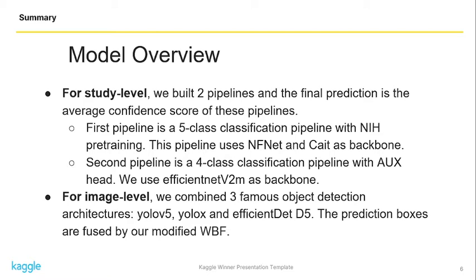In this competition we are required to detect the COVID situation at both study level and image level. For study level we build two pipelines and the final prediction is the average ensemble of these two pipelines. In the first pipeline we use five-class classification models and the backbone is NF-Net and CaRG. In the second pipeline we use four-class classification with a segmentation head and we use EfficientNet-B2-M as backbone.